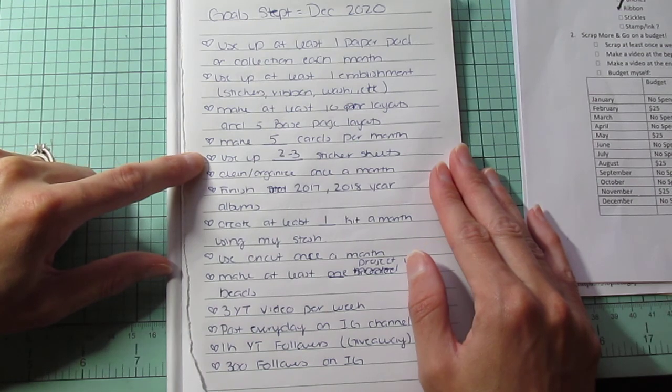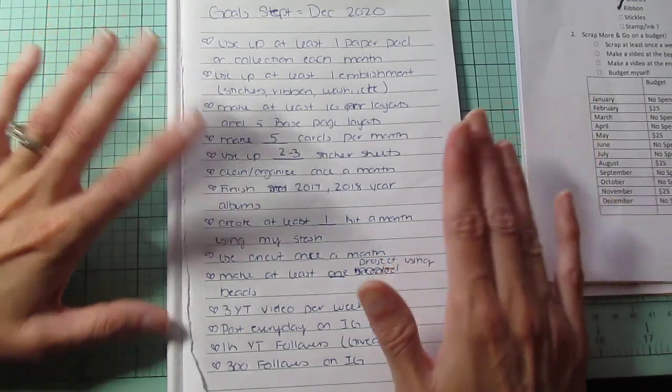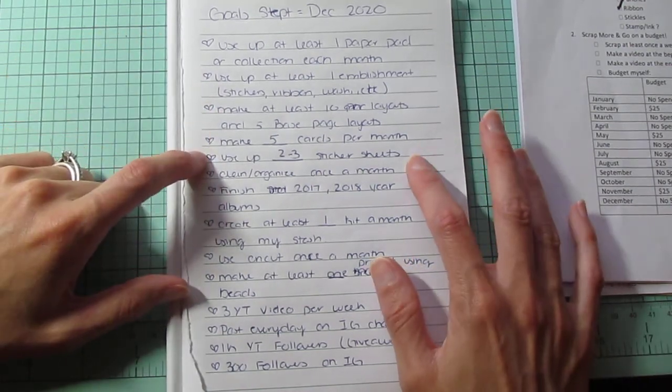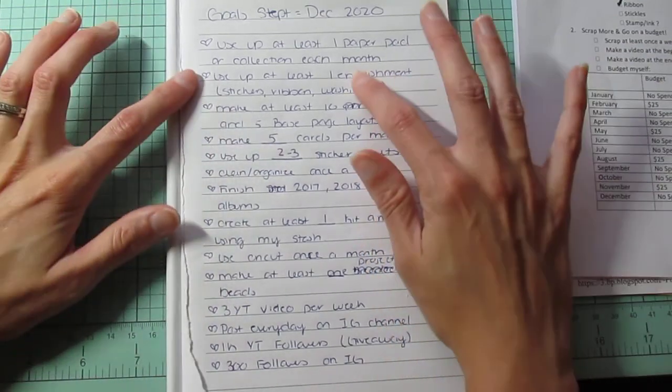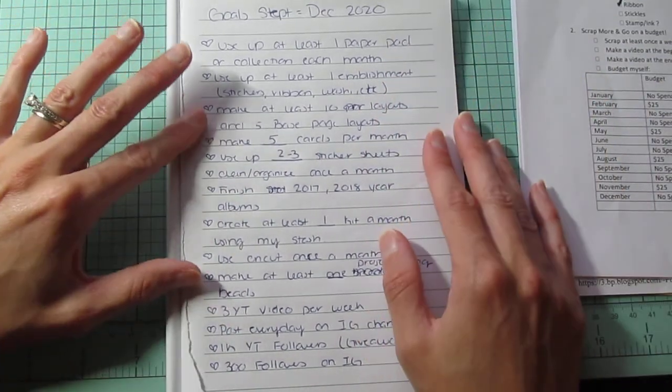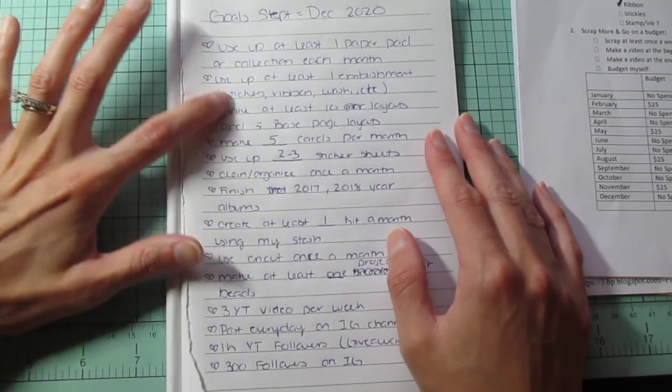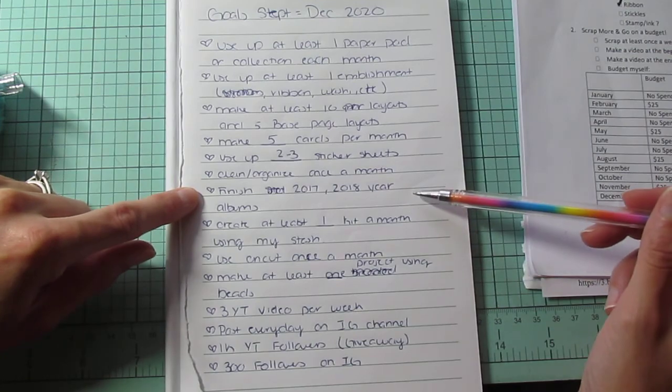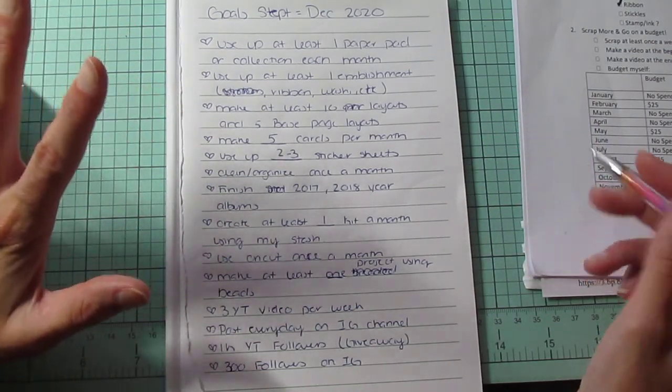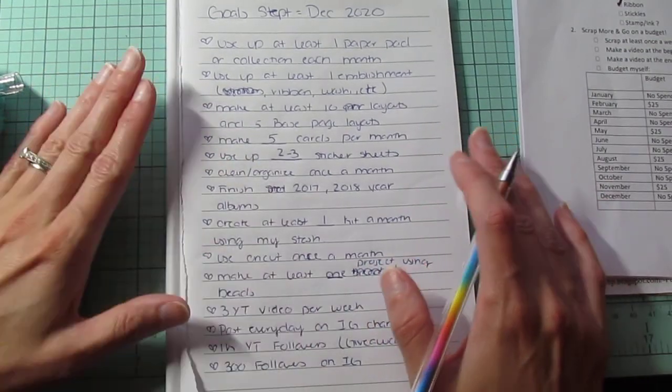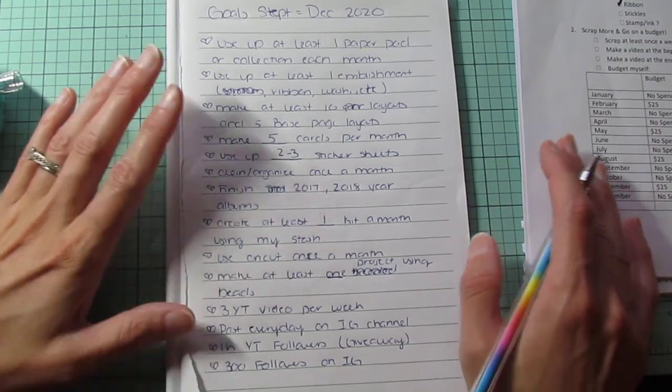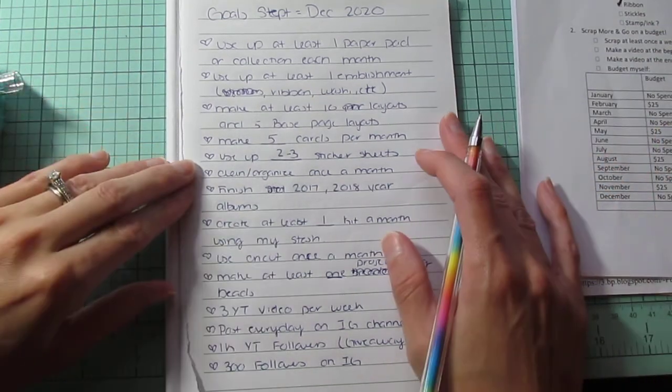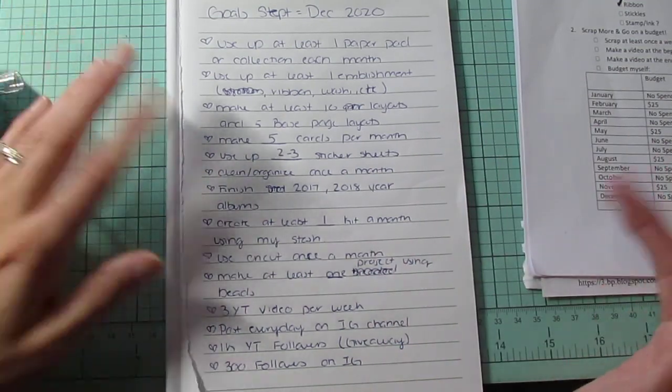The next goal is to use up at least one to two or two to three sticker sheets. I have a lot of sticker sheets. I really want to use two to three up and this can be part of a collection. This can be just like anything. The next one is clean and organize once a month. I got this from another YouTuber and she does it every single month. She cleans her space and I just find that sometimes you just need to do that. It would be nice to show you guys what I'm working on throughout the week and kind of just, even if it's for like 15 minutes, clean up my space.